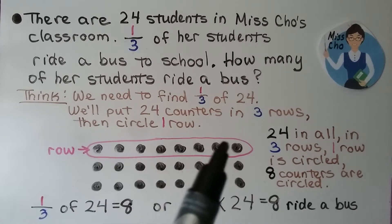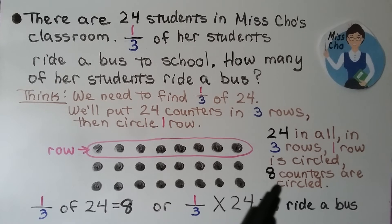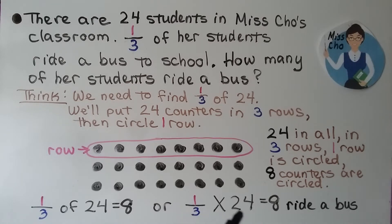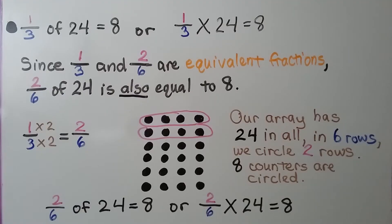We count how many are in that one row. We have eight counters that are circled. We know one-third of 24 is equal to 8, or we can say one-third times 24 is equal to 8 students that ride a bus.